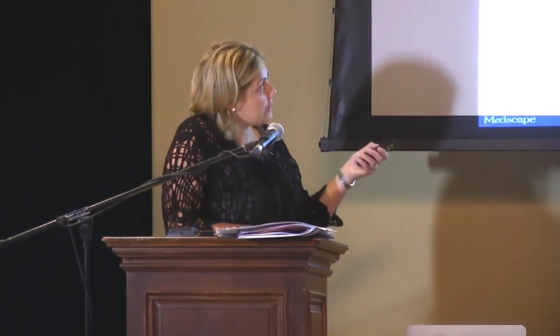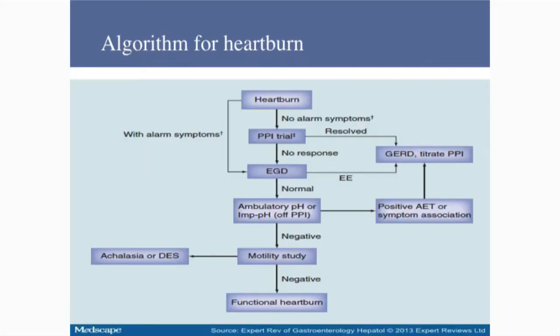Looking at the algorithm for heartburn: no alarm symptoms, try PPI; no response, do an endoscopy; alarm symptoms, go straight to endoscopy. Although they recommend ambulatory pH right away to look for symptom association for reflux, the GI society says to consider doing a motility study in conjunction with ambulatory pH to make sure esophageal peristalsis is within normal limits and you're not missing achalasia or a motility disorder.